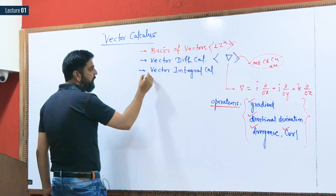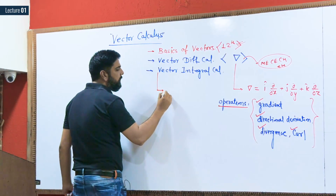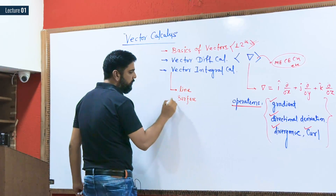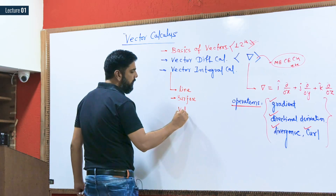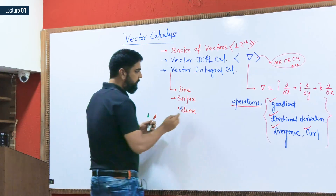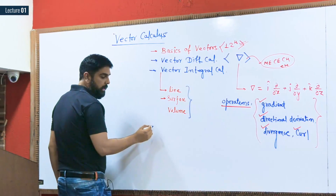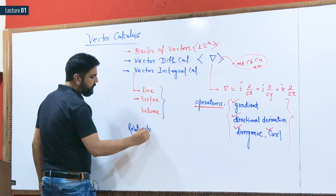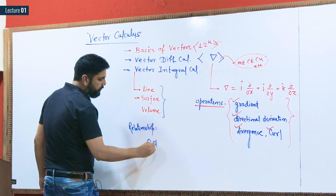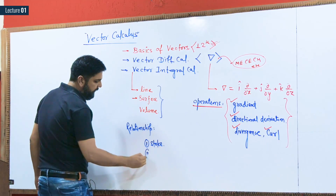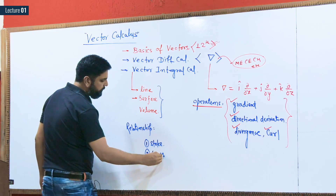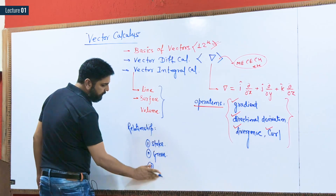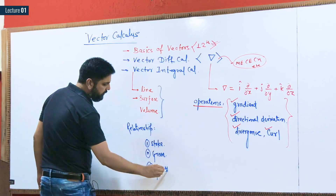In vector integral calculus, we first have the concept of line integral, then surface integral, and then volume integral. Once we have these three concepts, we move to the theorems — the relationships. Theorem number one is Stokes' theorem, related to which is Green's theorem. Then for surface to volume, we have the Gauss divergence theorem, or Gauss theorem.